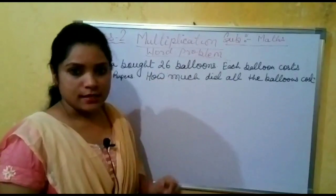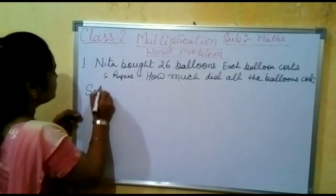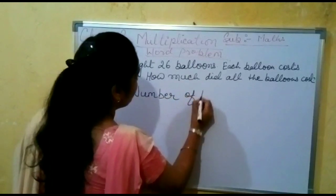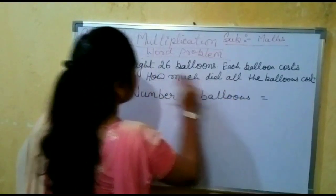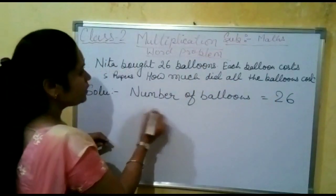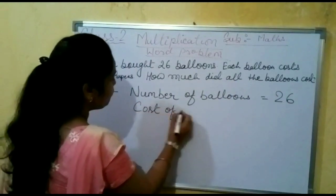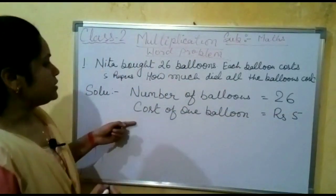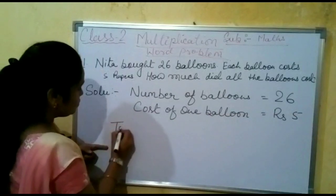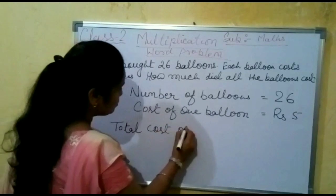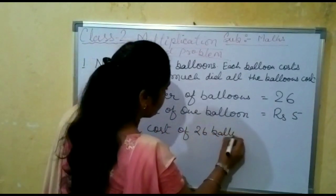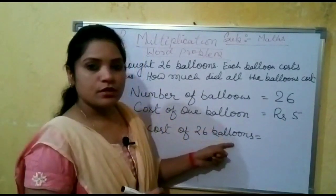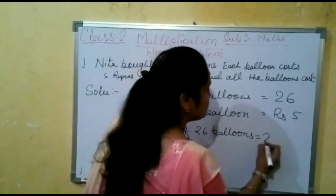In the word problem, we need to write sentences. We will write here: Solution. First sentence — number of balloons equals 26. Cost of one balloon equals 5 rupees. Now we will write the total cost of 26 balloons. The cost of one balloon is 5 rupees and we have to find the cost of 26 balloons, so we will multiply: 26 into 5.